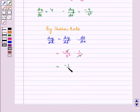So it equals minus 1 over t squared. Therefore, dy/dx equals minus 1 over t squared.